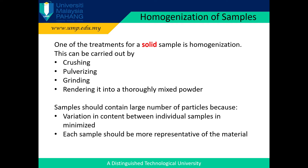Why don't we grind the particles as finely as possible? In trying to obtain very fine particles, there is a tendency that the sample will be contaminated from the large amount of handling. Because of their lightweight and dust-like nature, very fine particles can be difficult to handle and transfer. Samples should contain a large number of particles because variation in content between individual samples is minimized and each sample should be more representative of the material.